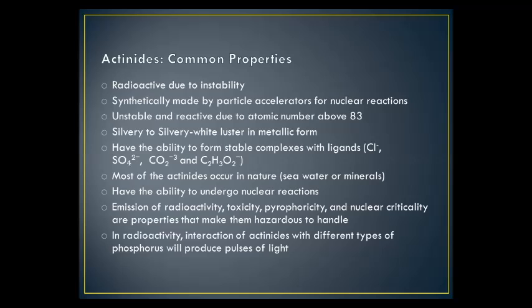Actinides have common properties: all are radioactive due to instability, the majority are synthetically made by particle accelerators creating nuclear reactions, and they are short-lasting. All are unstable and reactive due to atomic numbers above 83. All have a silvery or silvery-white luster in metallic form, and all have the ability to form stable complexes with ligands such as chloride, sulfate, carbonate, and acetate. Many actinides occur in nature in seawater or minerals, and they have the ability to undergo nuclear reactions. The emission of radioactivity, toxicity, pyrophoricity, and nuclear criticality make them hazardous to handle. The interaction of radioactive actinides with different types of phosphors will produce pulses of light.